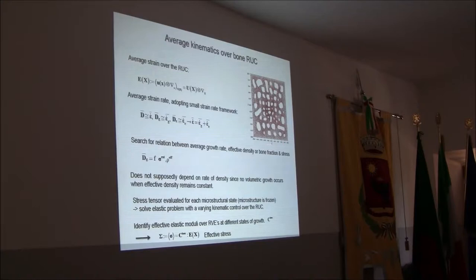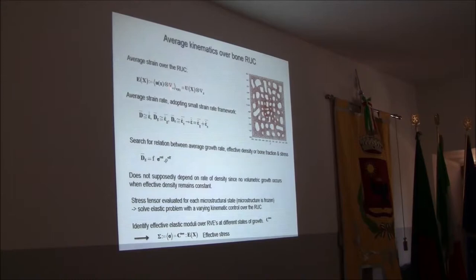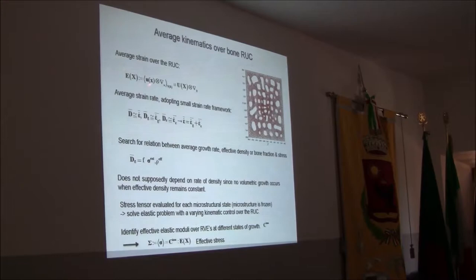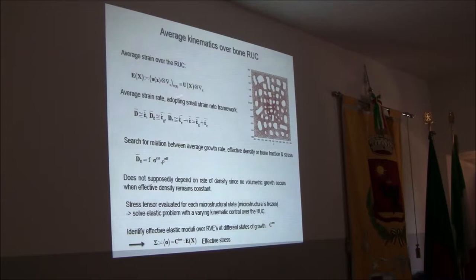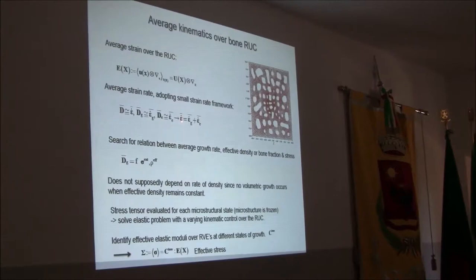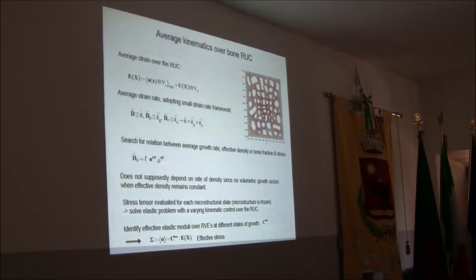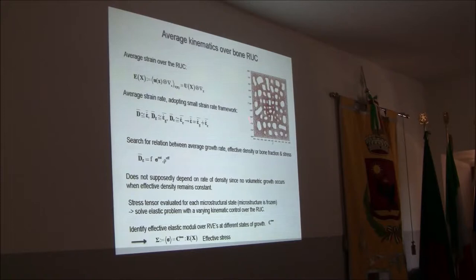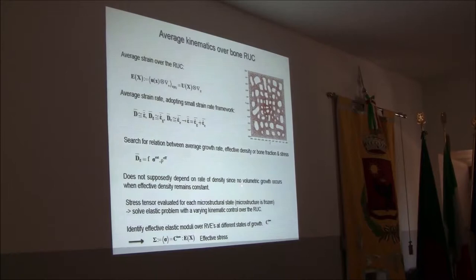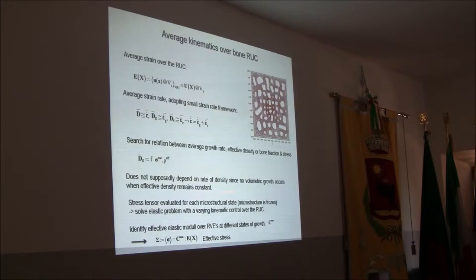For a typical microstructure, classical first-order homogenization theory defines the average strain over the representative unit cell (RUC) as the volume integral of the displacement gradient, which equals the macroscopic displacement gradient. We write the kinematic decomposition of the average strain rate into growth and elastic strain rates. What we are searching for is a relation between the average growth rates over the RUC versus applied stress — the external stress and effective density. It can be shown that no volumetric growth occurs when the effective density is constant.